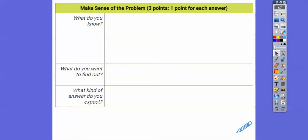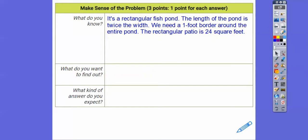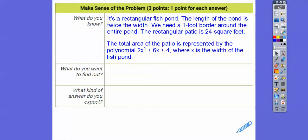So what do we know? It's a rectangular fish pond, the length of the pond is twice the width. We put a one-foot border around the entire pond, and the rectangular patio including that one-foot border is 24 square feet. The total area of the patio is represented by the polynomial 2x² + 6x + 4, where x is the width of the fish pond. What do we want to find out? We want to find out the dimensions of the fish pond.